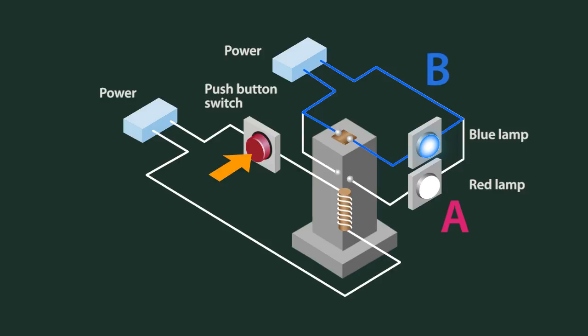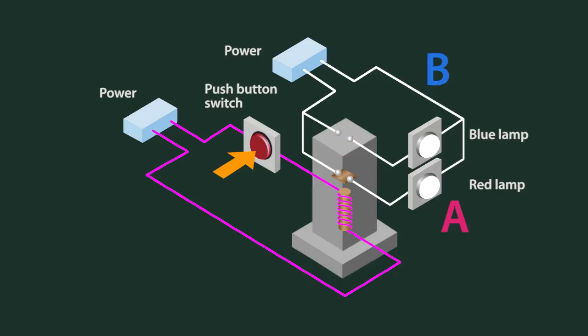If we push the push button, current will flow through the coil of the relay, which is an electromagnet that then pulls the relay contact down.